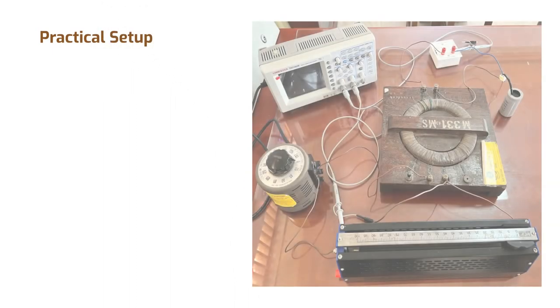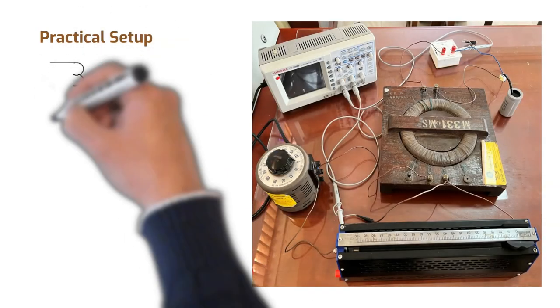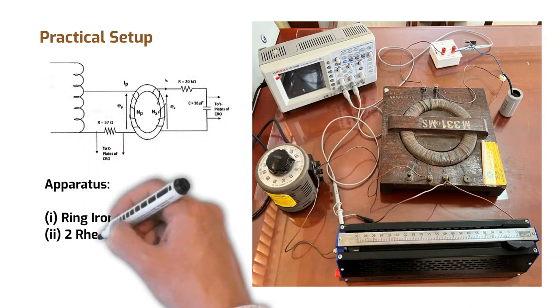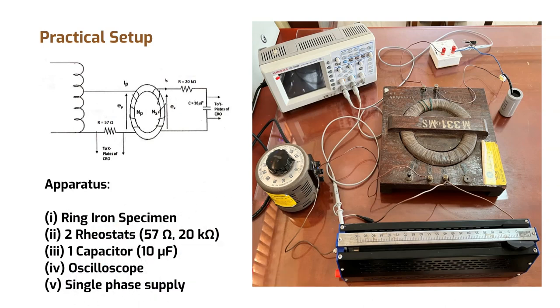Now let's have a look at the practical setup. As shown in the circuit diagram also, for this practical, we need a ring iron specimen, a 57 ohm resistor, a 20 kilo ohm resistor, a capacitor of 10 micro farad, an oscilloscope and a single phase supply.